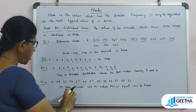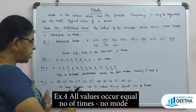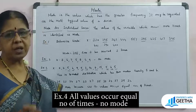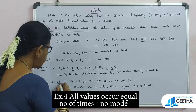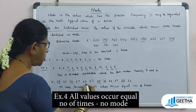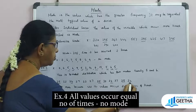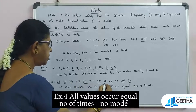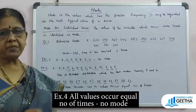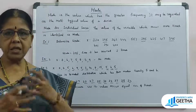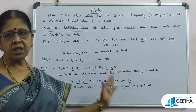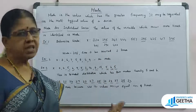In the third exercise, there is no mode because all the values occur an equal number of times. For example, the value 25 appears 3 times, and similarly all other values also appear 3 or 4 times equally. When all values occur an equal number of times, we say there is no mode.